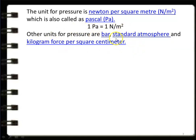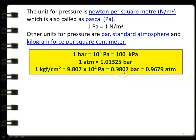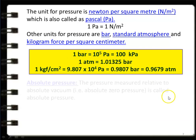Other units of pressure are bar, standard atmosphere, and kilogram force per square centimeter. Conversion: one bar equals 10⁵ pascal or 100 kilopascal. One atmosphere equals 1.01325 bar. One kilogram force per centimeter square equals 9.8071 × 10⁴ pascal, or 0.9807 bar, or 0.9679 atmosphere. Important to remember: one bar equals 10⁵ pascal, and one atmosphere equals 1.01325 bar.